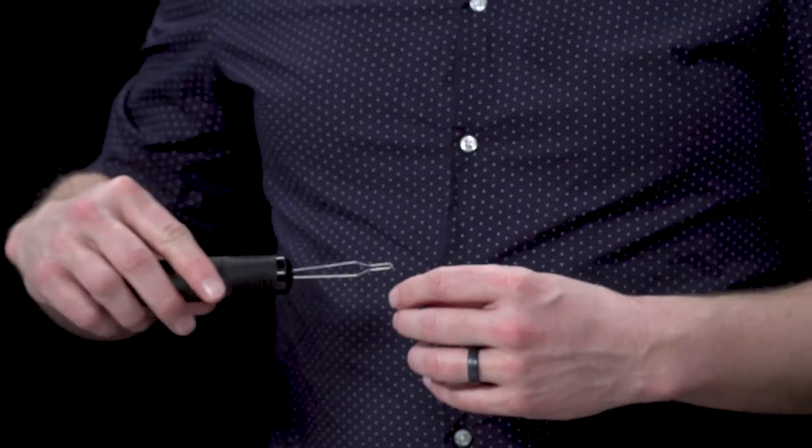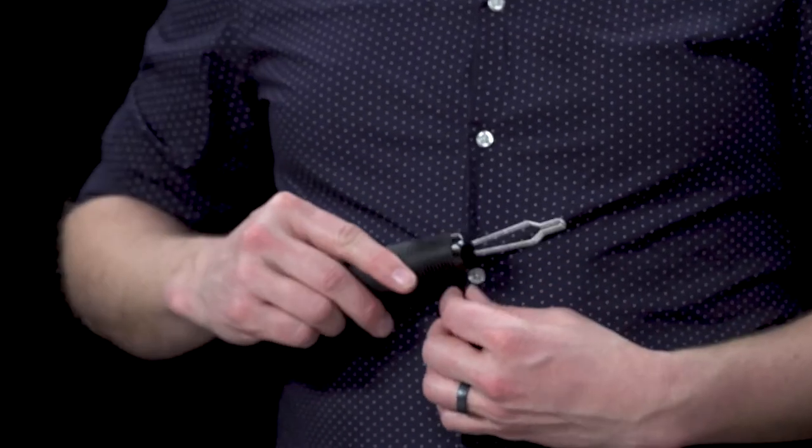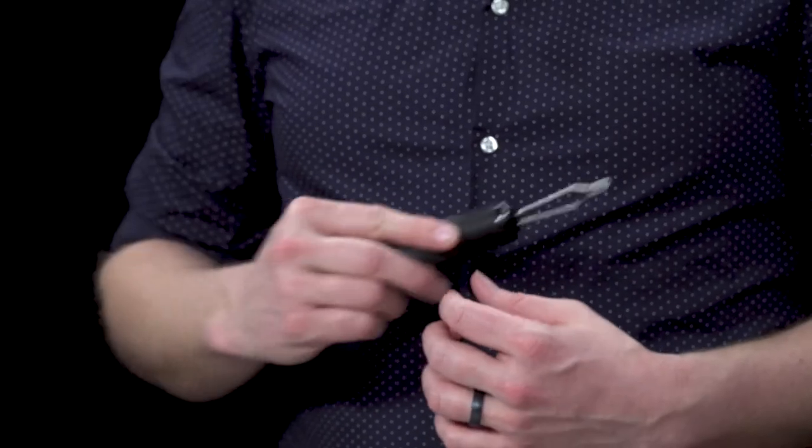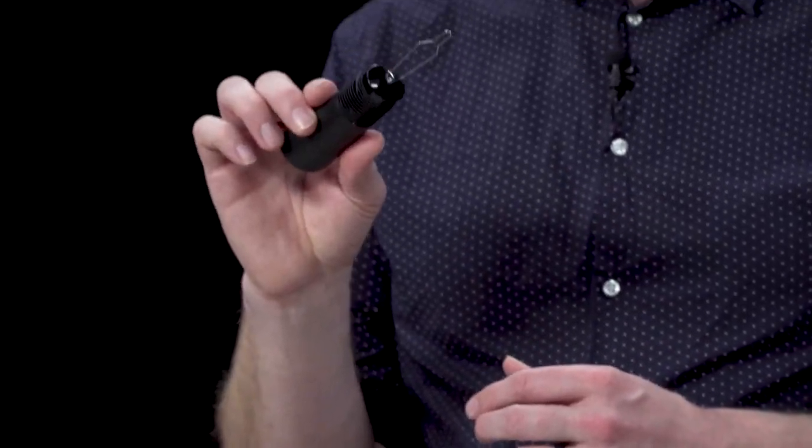But how this works is basically you thread, you can thread the button hook in and then pull it out. So you can just basically go in and out of the shirt buttons and using this to hold on to the buttons for you.